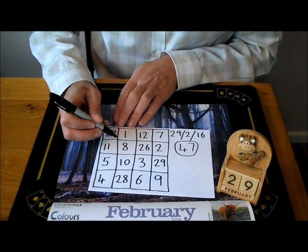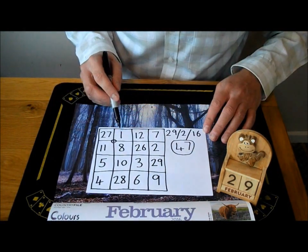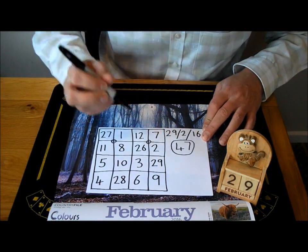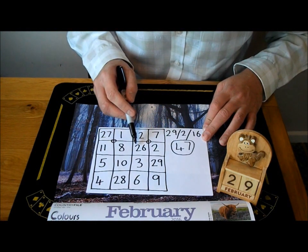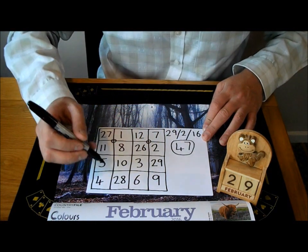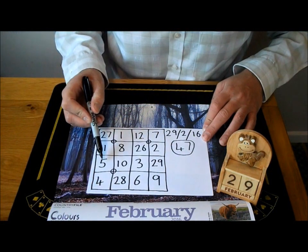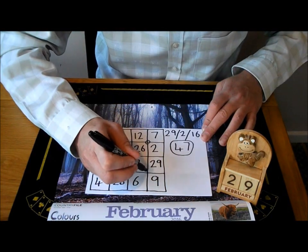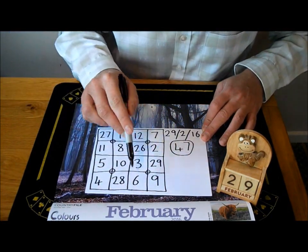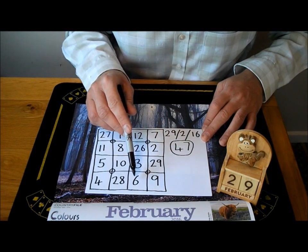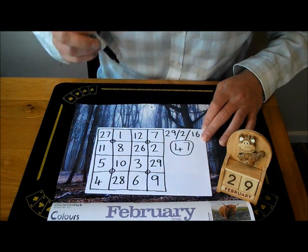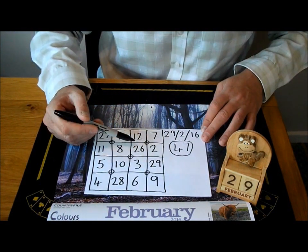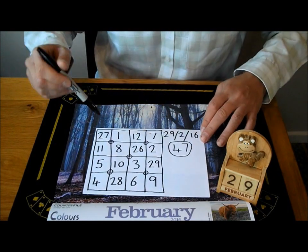If we add up these four numbers here, 27 plus 1 plus 11 plus 8 is 47. These four here, 12 plus 7 plus 26 plus 2 is 47. These four numbers here, 5 plus 10 plus 4 plus 28 is 47. If we add these four numbers up here, 3 plus 29 plus 6 plus 9 is 47. And the 4 in the middle, 8 plus 10 plus 3 plus 26 is 47.